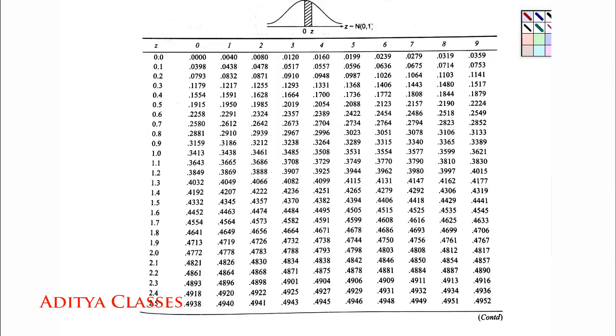Here is our table. Z score for table value of 0.475. Where is 0.475? Let me check. Here is 0.475. What is the Z? 1.96.